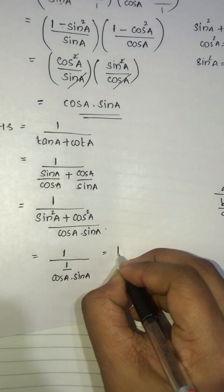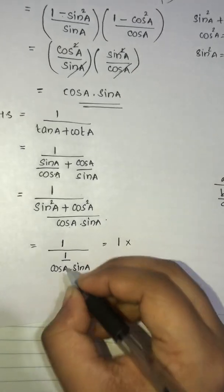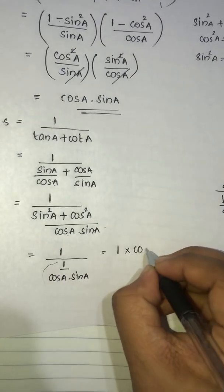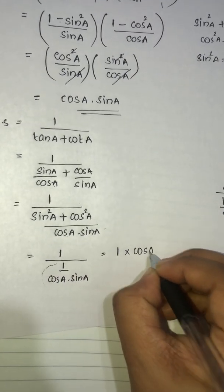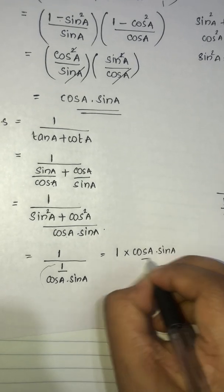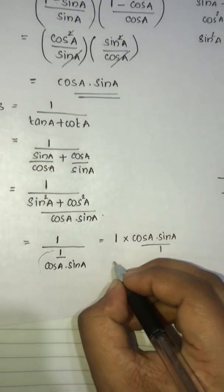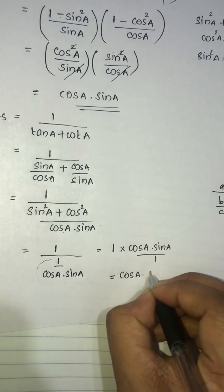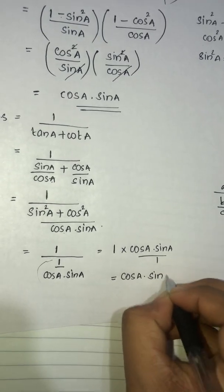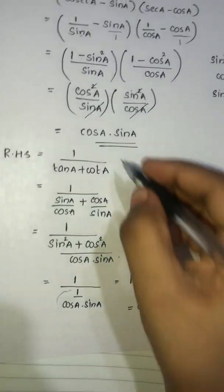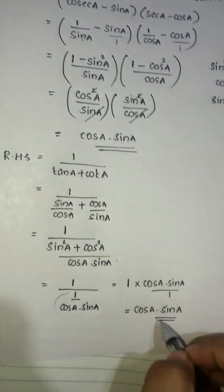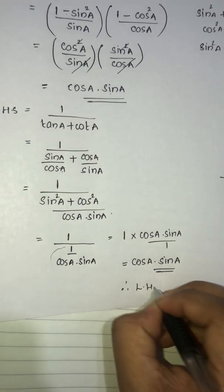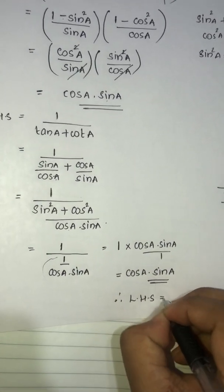This equals cosA·sinA in the denominator, which equals 1 divided by (cosA·sinA). This is how we simplify, and hence LHS is equal to RHS.